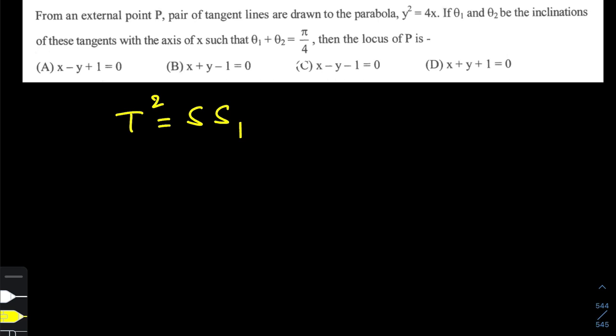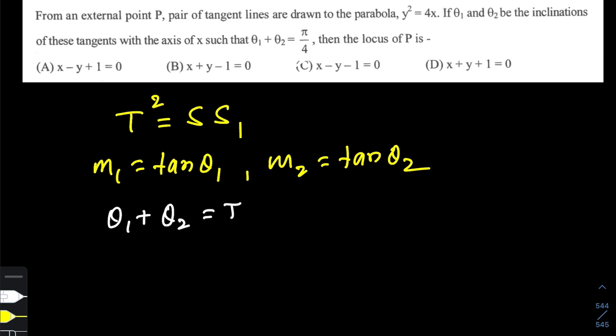Now we have also been given the angle of inclination of these two tangents. We know that m₁ = tan θ₁ and m₂ = tan θ₂. Now θ₁ and θ₂ are related by the fact that θ₁ + θ₂ = π/4.